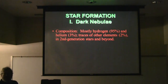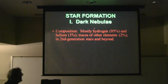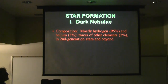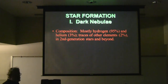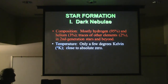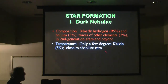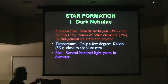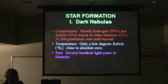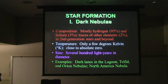A dark nebula consists mainly of hydrogen, about 95%; about 3% helium; and traces of other elements — roughly 2% everything else from the periodic table. If this is a second-generation star or beyond — and of course they all are now, since we're nearly 14 billion years into the universe — that's typical. Temperature is only a few degrees above absolute zero, maybe three or four Kelvin. These clouds of gas and dust are several hundred light-years in diameter — about the distance to most bright stars in the sky.